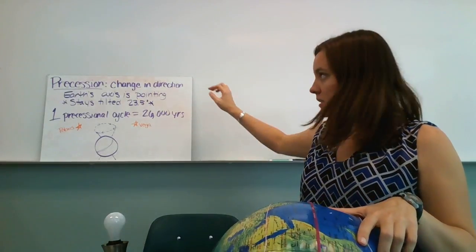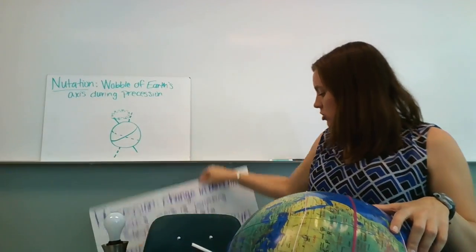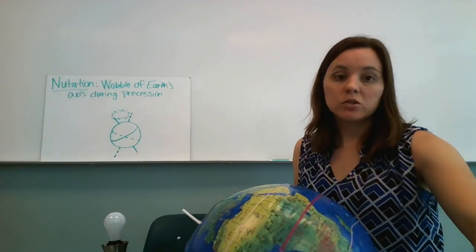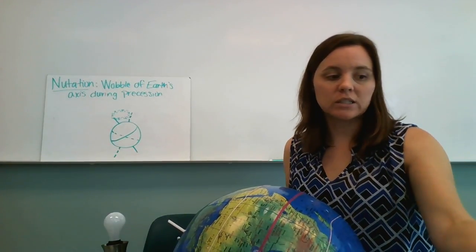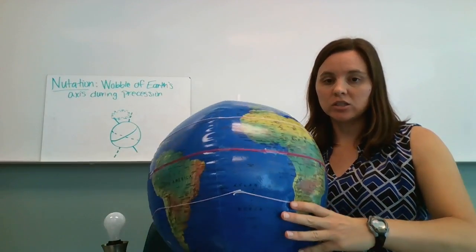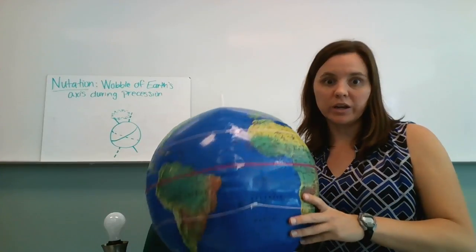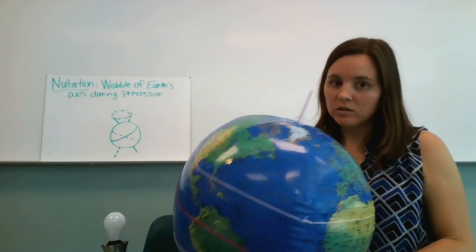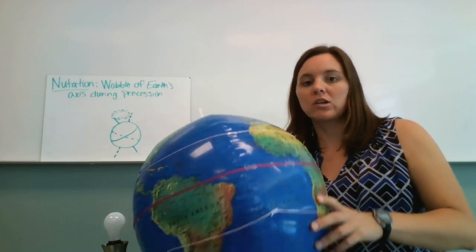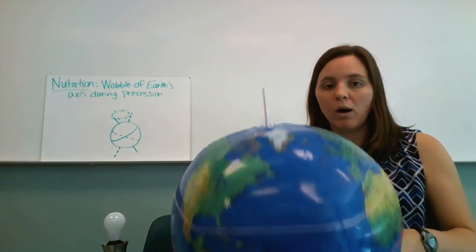And then lastly, we have a movement called nutation. So this is happening while precession is happening. So while the earth's axis is changing its direction, it's kind of weevil wobbling a little bit. Only one degree. So it's really not detectable to us at all. But while it's doing precession over that 26,000 years, it's doing this little wobble thing.